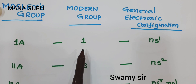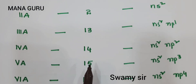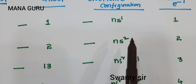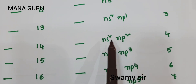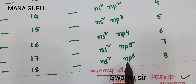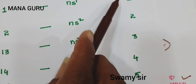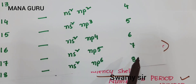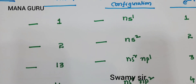In the modern periodic table, these groups are assigned as 1, 2, 13, 14, 15, 16, 17, and 18. The number of valency electrons are 1, 2, 3, 4, 5, 6, 7, and 8 respectively. This is the information students need to remember.